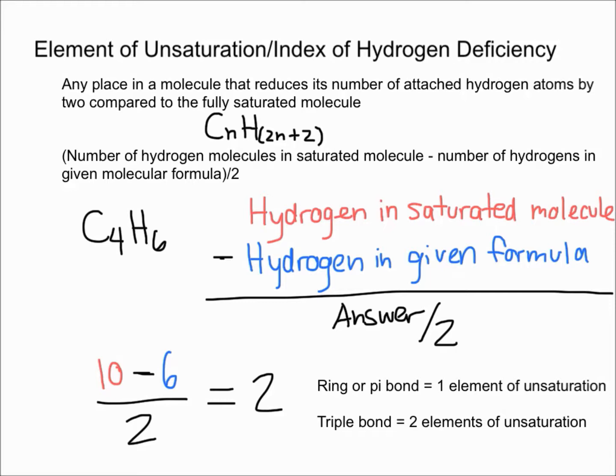If you have a triple bond, that will give you two elements of unsaturation. For this molecule, you could have many combinations, as long as it adds up to two elements of unsaturation. That pretty much sums it up for element of unsaturation, or index of hydrogen deficiency.